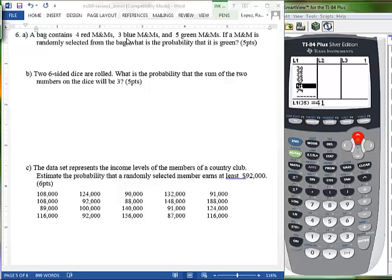Part A, a bag contains four red M&Ms, three blue, five green. If an M&M is randomly selected from the bag, what's the probability that it's green?